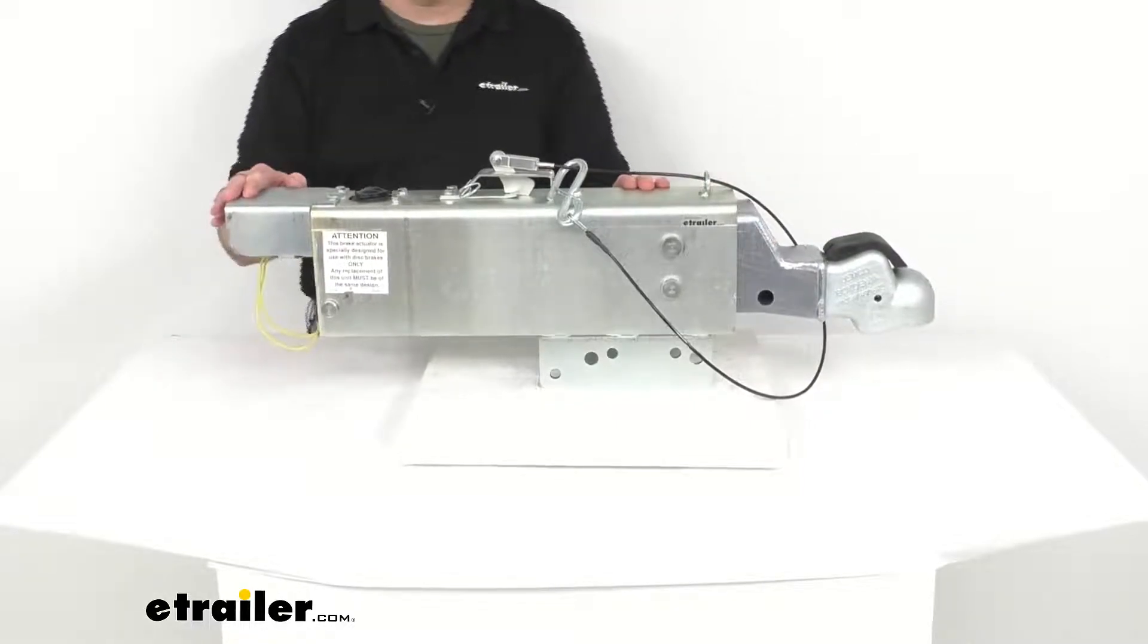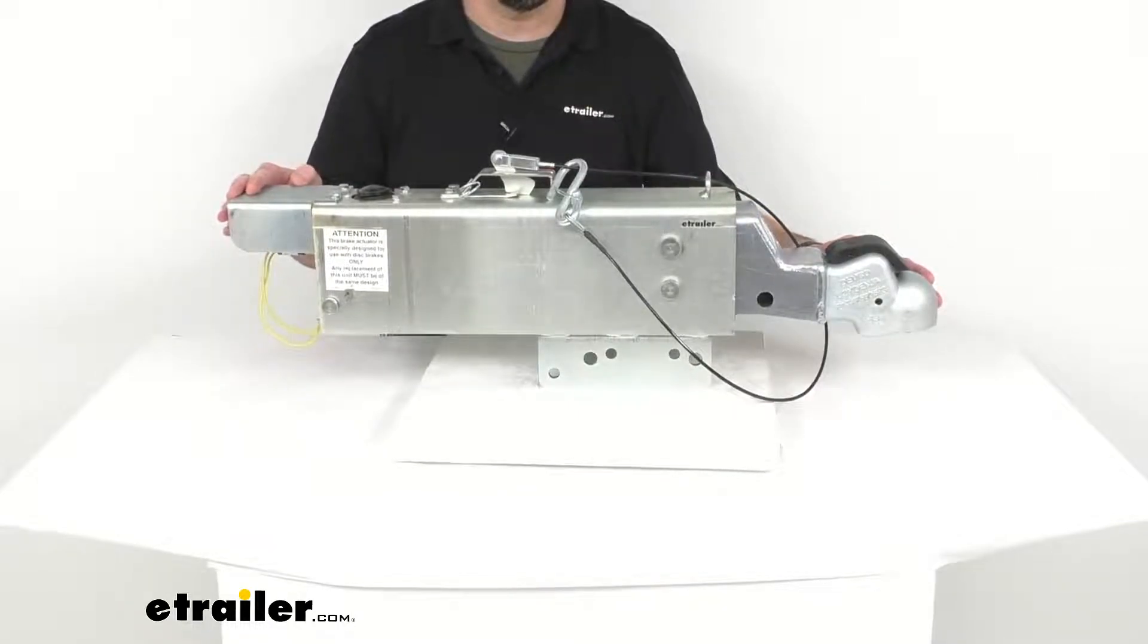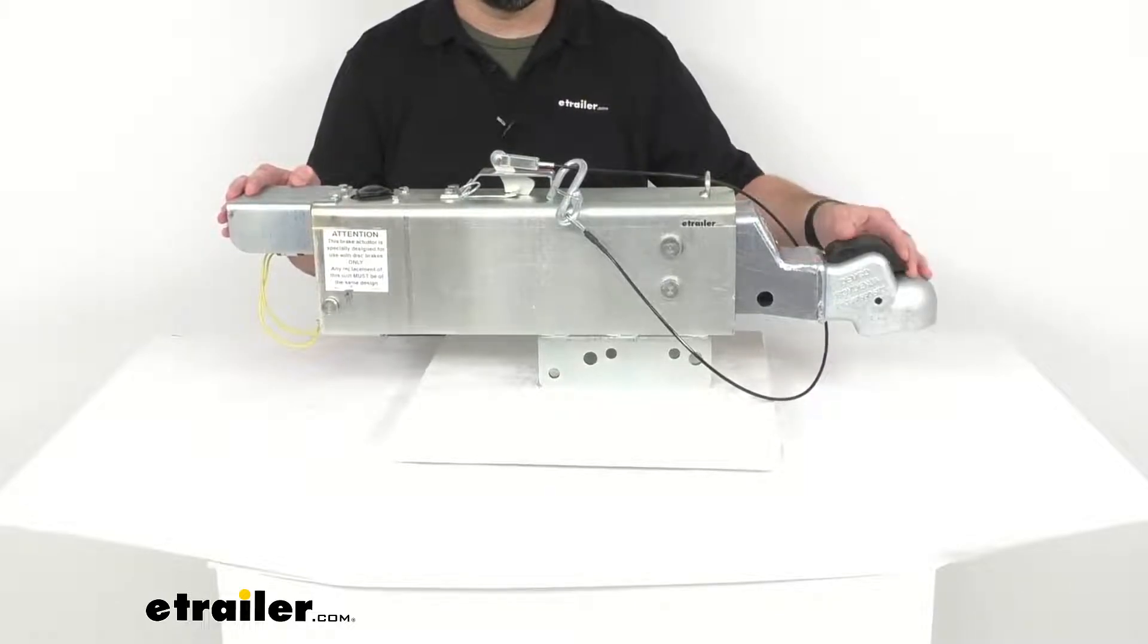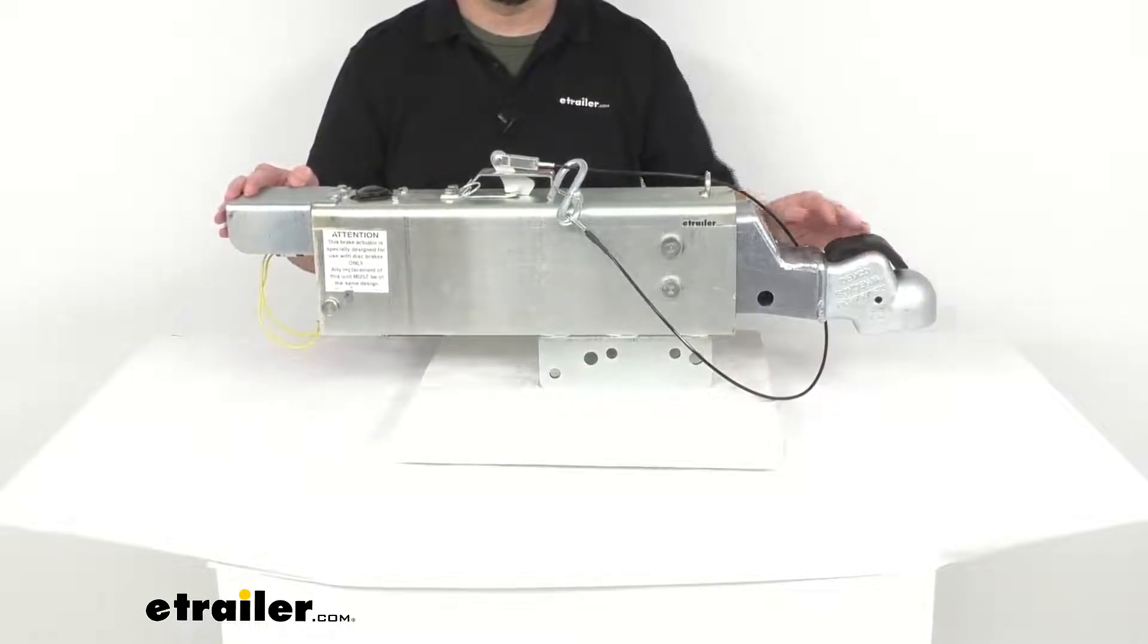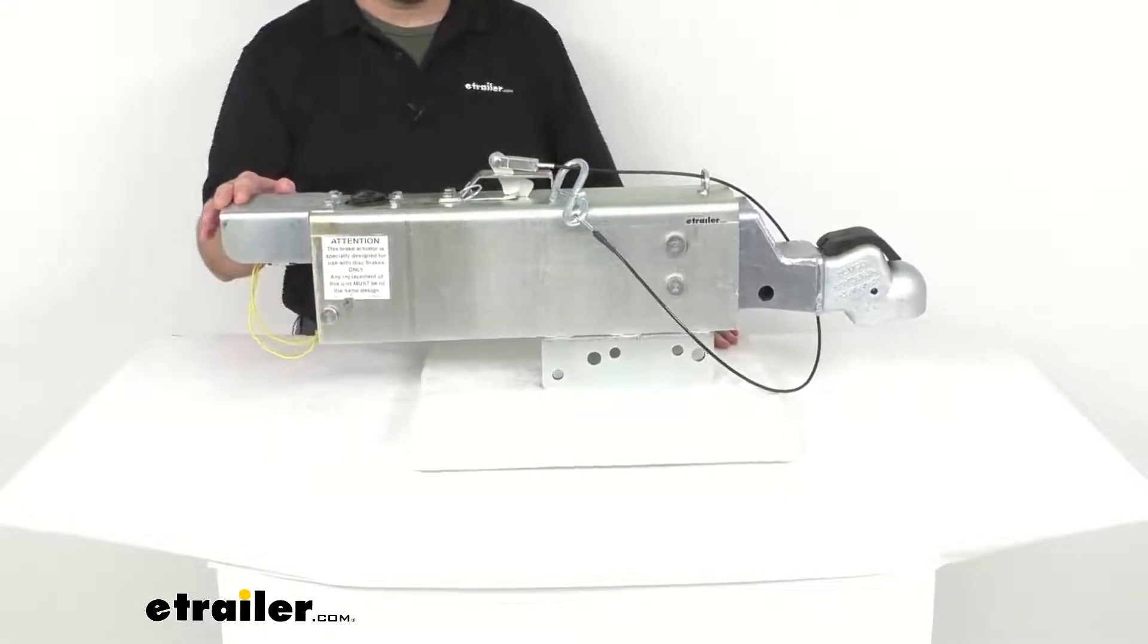This hydraulic actuator will activate your trailer brakes when the tow vehicle slows or stops. This coupler has a 4 inch drop which will help you match your tow vehicle's height.